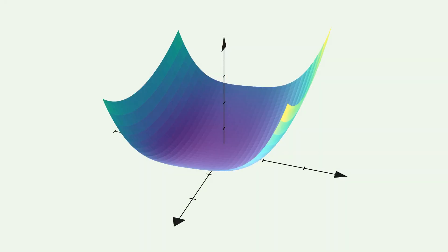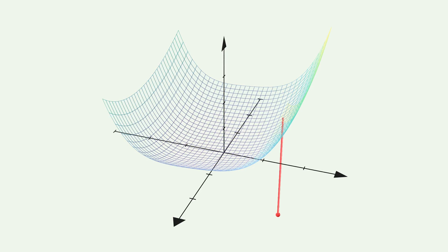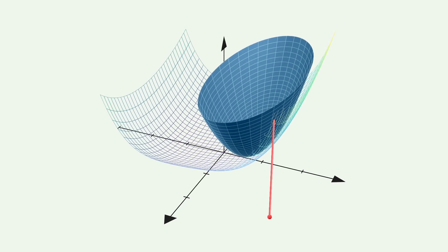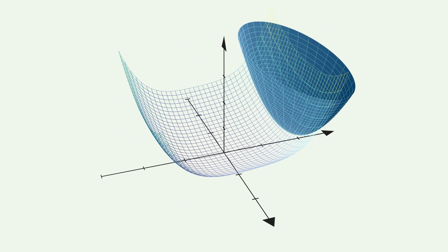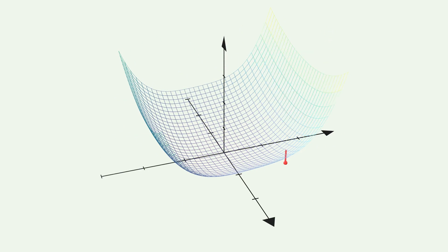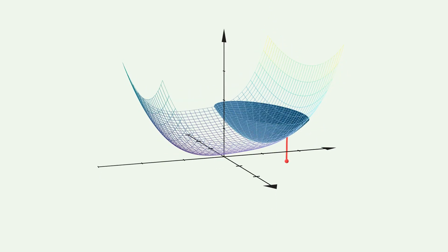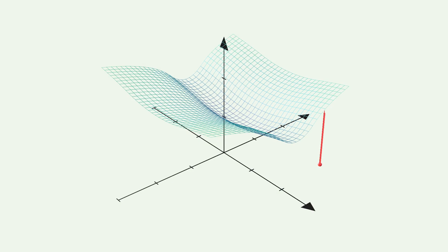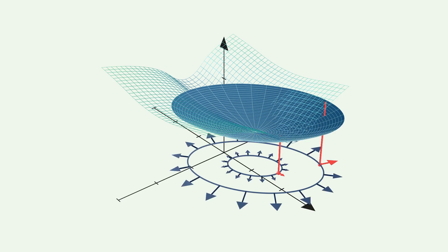In the first video we looked at Newton's algorithm. Newton's algorithm replaces the function to minimize with a quadratic approximation, selects the minimum of this approximation as the new point, and then creates a new approximation at this point. BFGS also uses a quadratic approximation but uses a special way to compute it. The quadratic approximation is chosen such that it has the same gradient as the original function at the current point and the last point. There are more constraints to this approximation which were explained in the previous video.